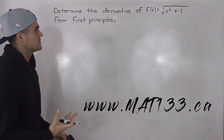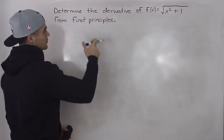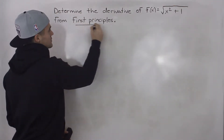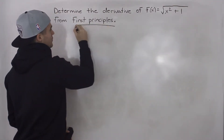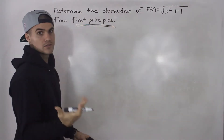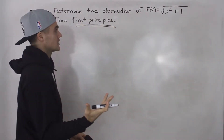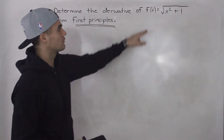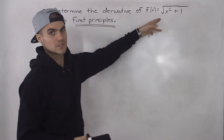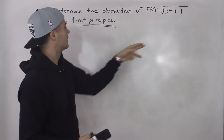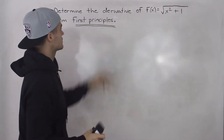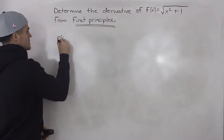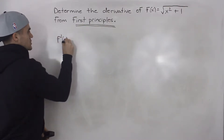Whenever you see a question asking you to find the derivative using first principles, you know you're going to have to do it the long way using the difference quotient. Notice that we can find the derivative of this pretty quickly using the chain rule, but since they're asking for first principles, we need to use the difference quotient.